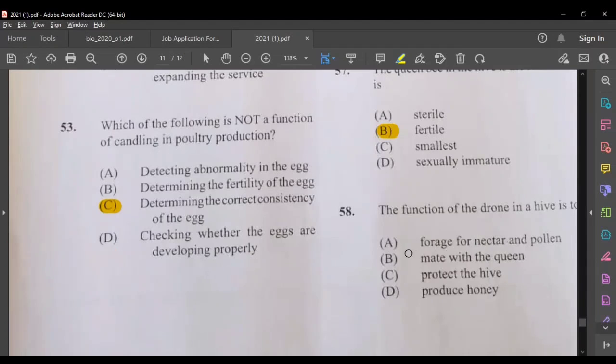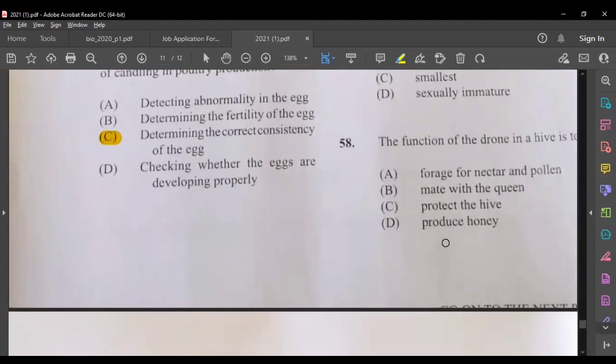Function of the drone in the hive. Forage for nectar and pollen, that sounds more like the function of the worker bee. Mate with the queen. Yes, that would be the function of the drone.